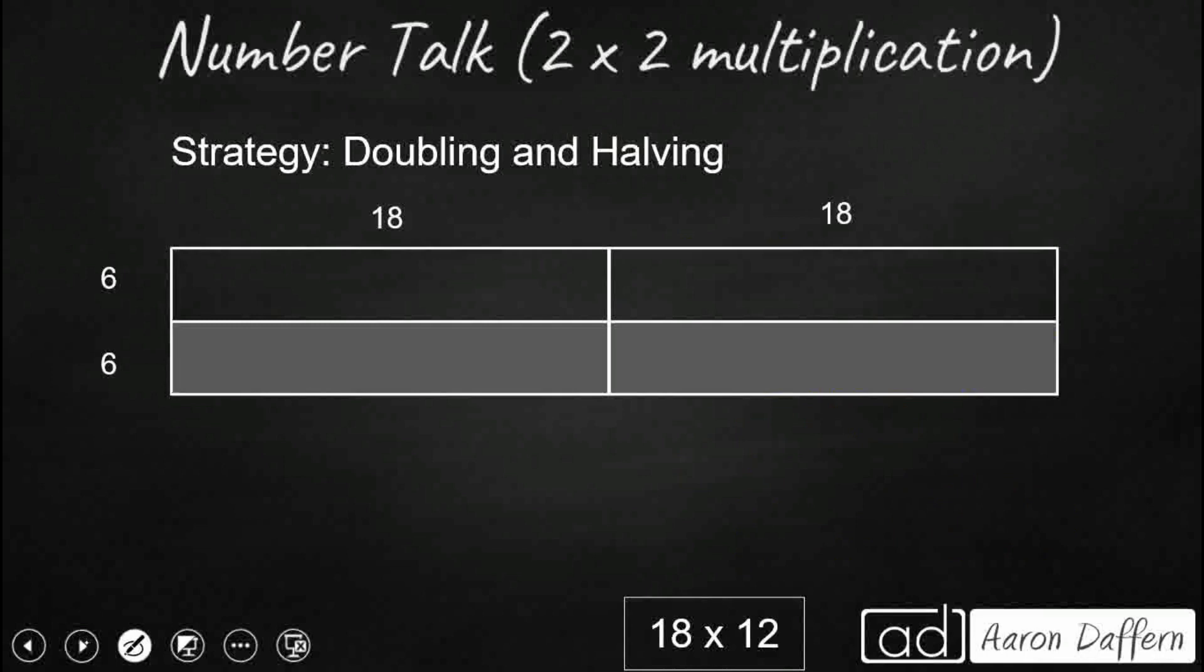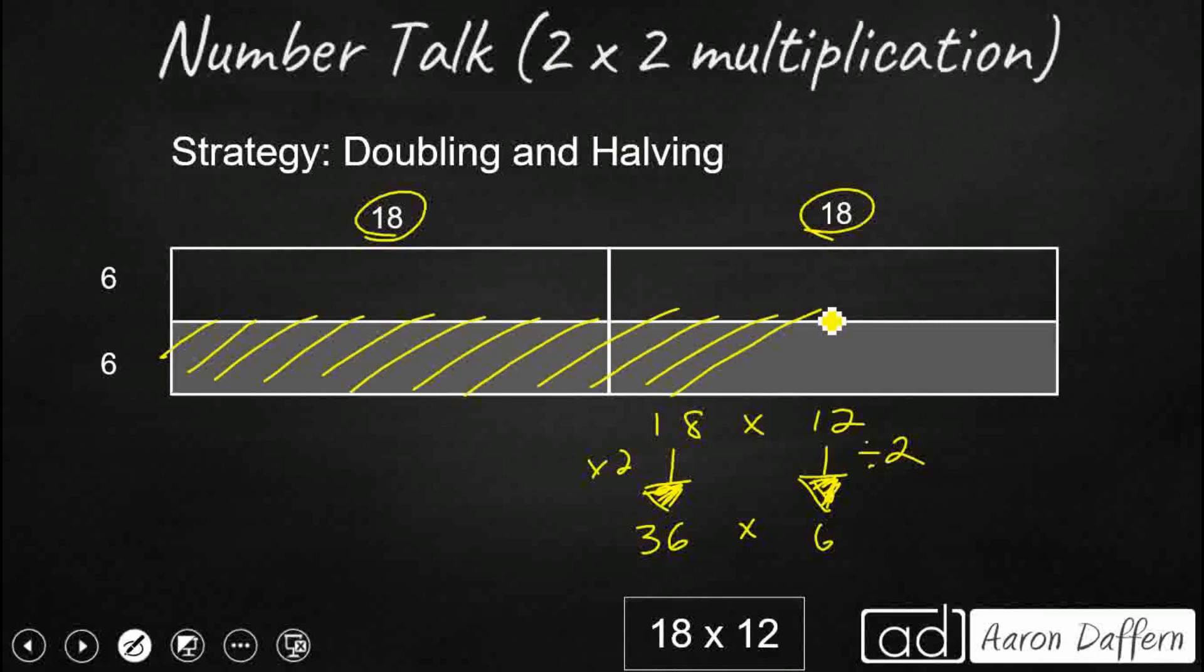Doubling and halving also works if we take our 18 and instead of cutting it in half, we double that one. Since both factors are even, we could do it both ways here. So we're going to double our 18. We're going to make that 36. So that's why I've got two 18s, which means in order to keep a balanced expression, since I doubled my 18, I'm going to take my 12, cut it in half. So I've got a 36 times 6. That's why I've got this 6 down here in a gray box.